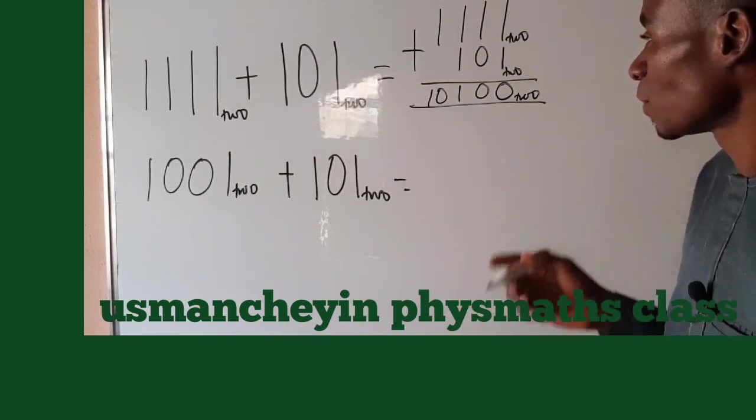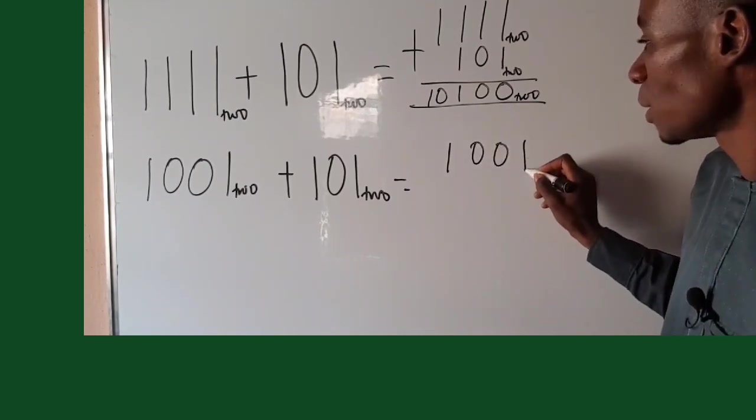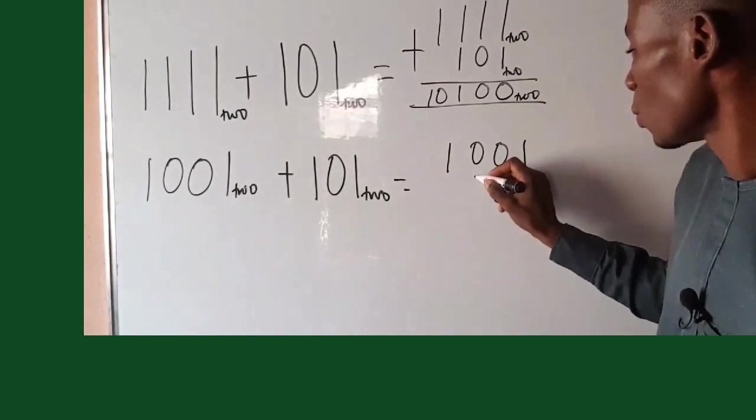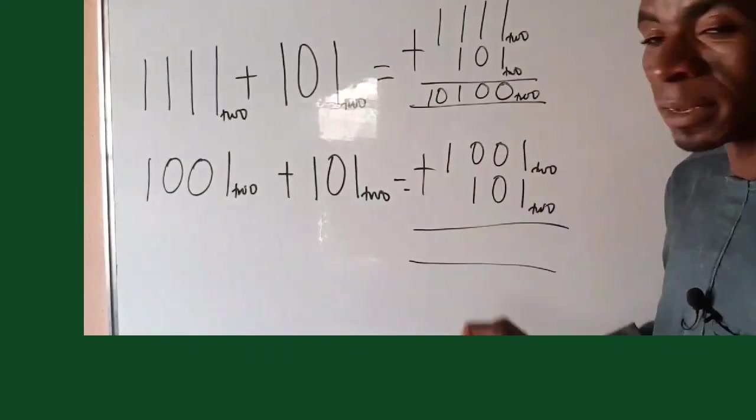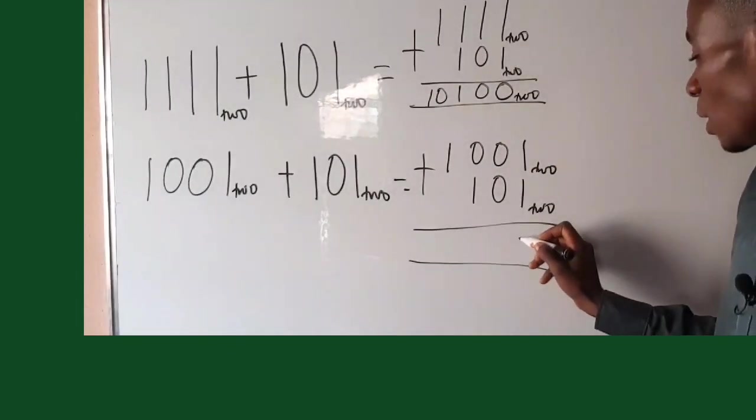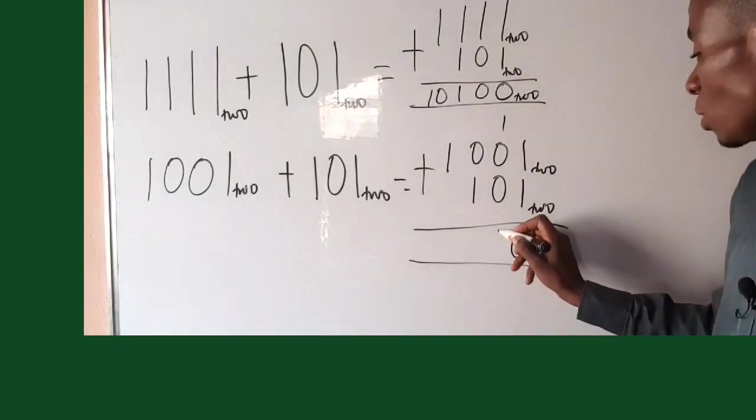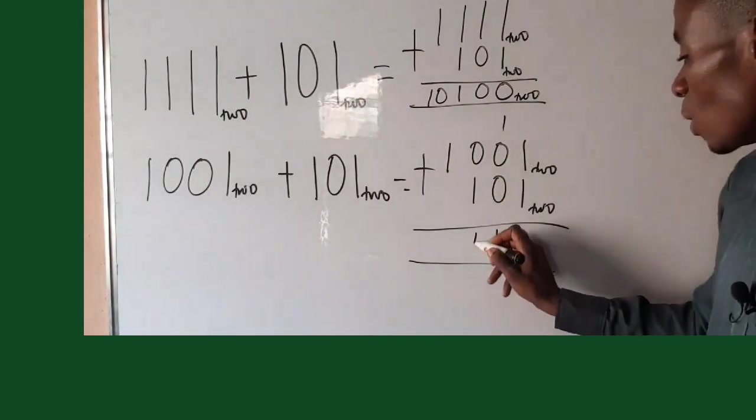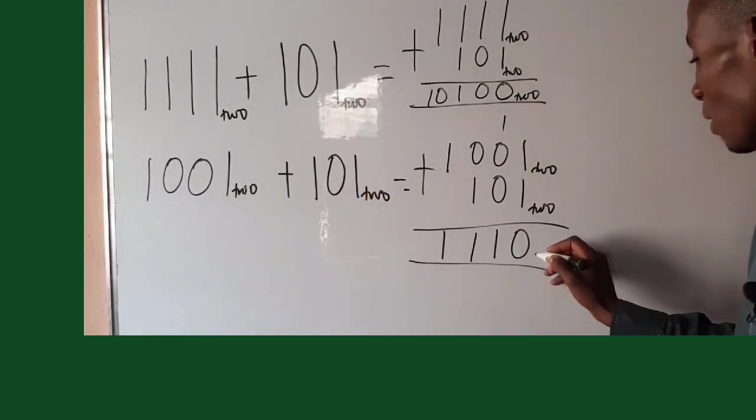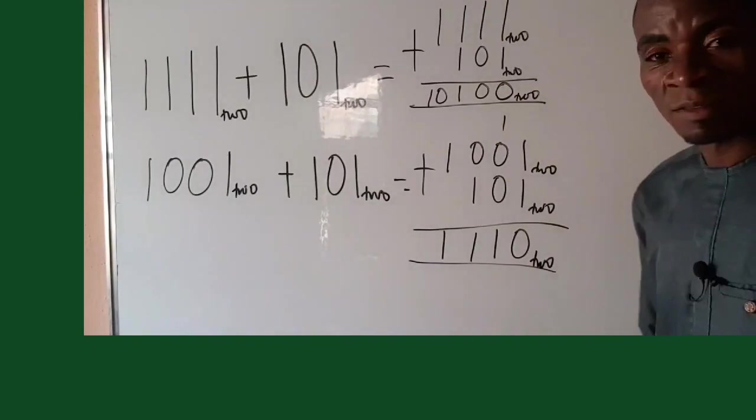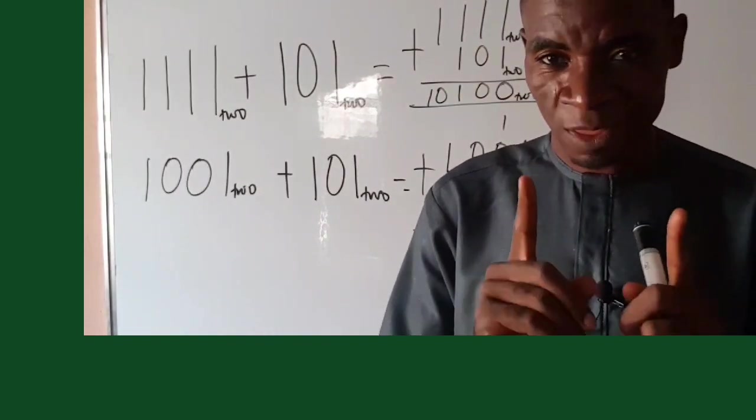Let's come down to the second example. We are having 1001₂, then 101₂. All of them are in base two. Remember we are adding. So this will be one plus one, we have 10₂. Write zero, carry one. One plus zero is one, plus zero is still one. So you bring down your one. Then zero plus one is one, you bring it down. Then you bring down your one. So it means if you add this number, you're going to have 1110₂ in base two, and that is it. You get your final answer. Thank you.